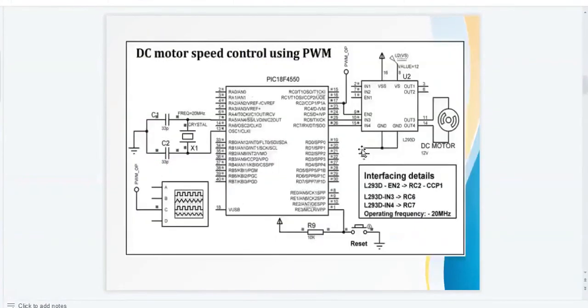So PWM is a powerful technique for controlling analog circuits with a microcontroller's digital outputs. Now this is an interfacing diagram where a DC motor is connected with the PIC 18F controller. L293D is a driver IC, and the output of PWM will be taken at pin RC2.